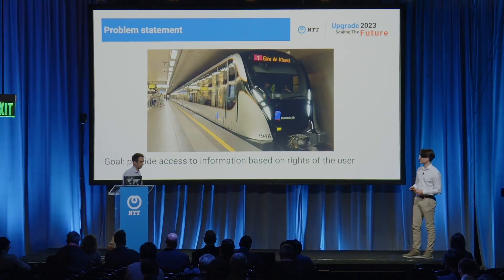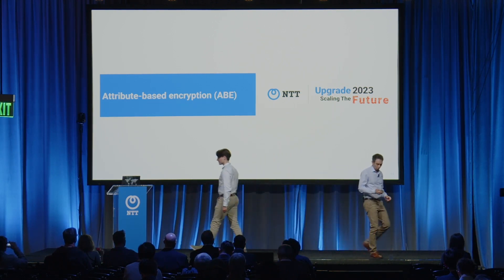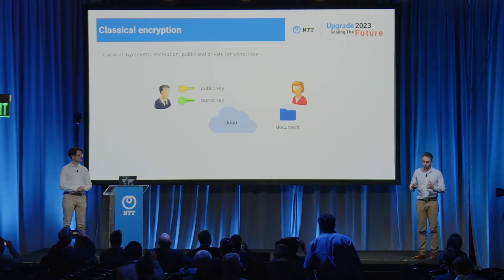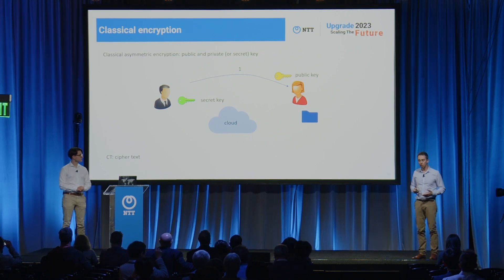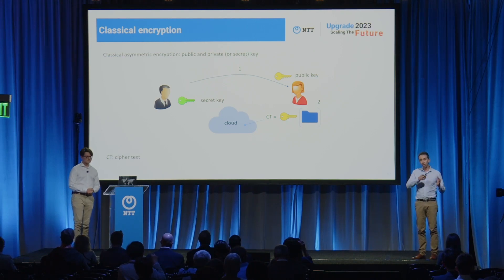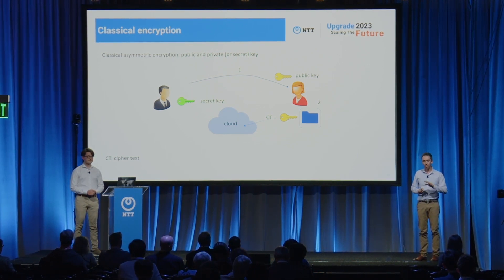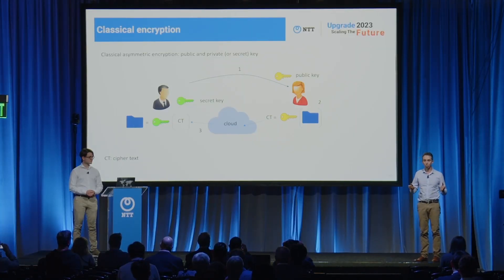So, how could we use ABE to secure information inside images? First, a short presentation of ABE. In classical encryption, when a private document needs to be sent, the person who needs the document sends his public key to the sender. This public key travels across the network, so it is not considered safe — we can assume the key can be compromised. But it doesn't matter because this key is only used for encryption, and it's not possible to decrypt with it. The document is encrypted with the key, giving a ciphertext that can be put in a database, and then the receiver can use his secret key to decrypt the document.